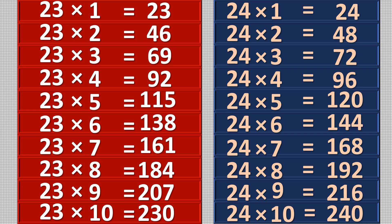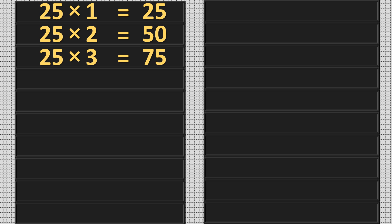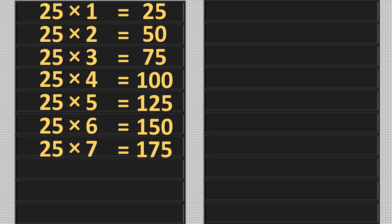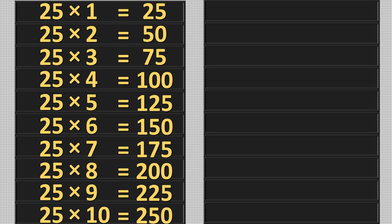25 ones are 25, 25 twos are 50, 25 threes are 75, 25 fours are 100, 25 fives are 125, 25 six are 150, 25 sevens are 175, 25 eights are 200, 25 nines are 225, 25 tens are 250.